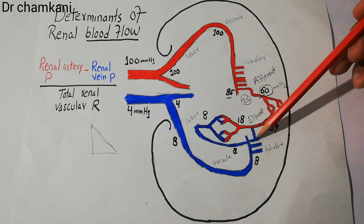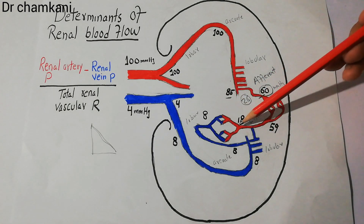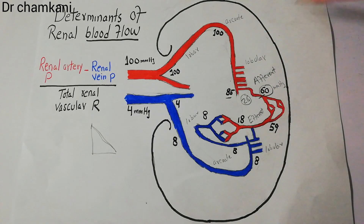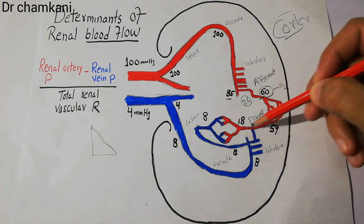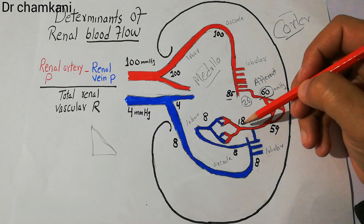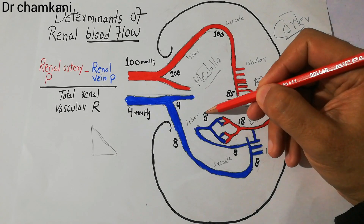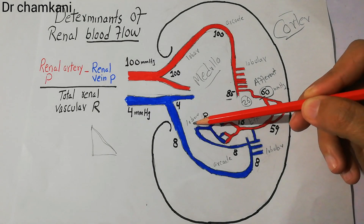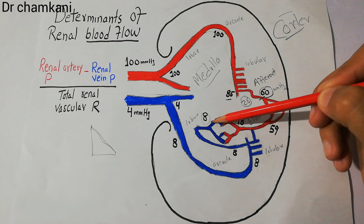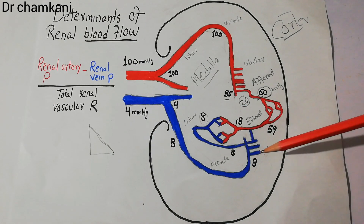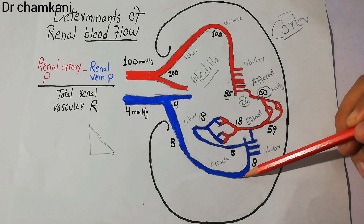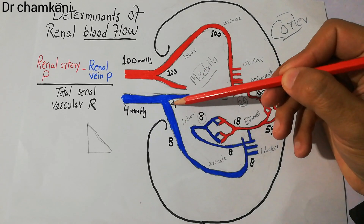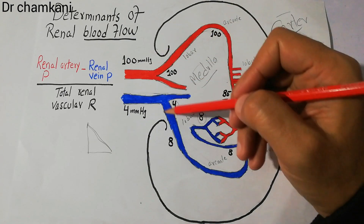After the efferent arteriole, some blood directly enters the interlobular veins while some goes into the peritubular capillaries. The peritubular capillaries contribute to the vasa recta and go deep into the medulla. At the start of the peritubular capillaries the pressure is 18 mmHg, dropping to around 8 mmHg at the end. From the interlobular veins through the arcuate and interlobar veins, pressure remains around 8 mmHg, but at the end of the interlobar vein it drops to 4 mmHg.